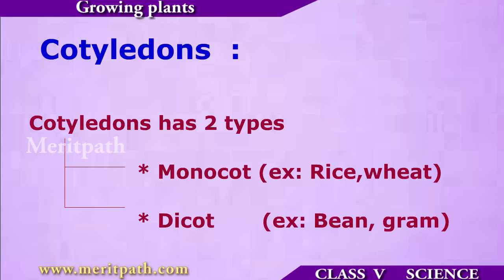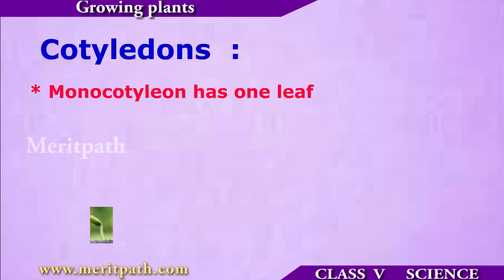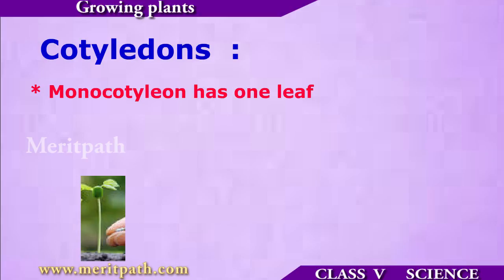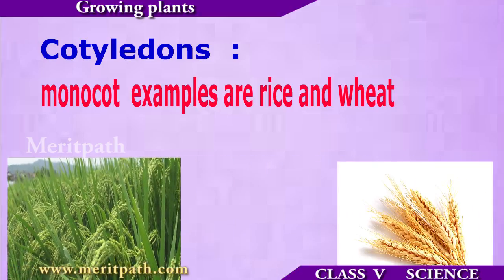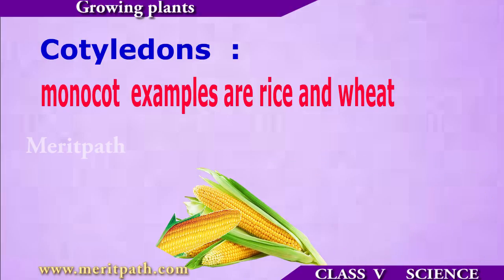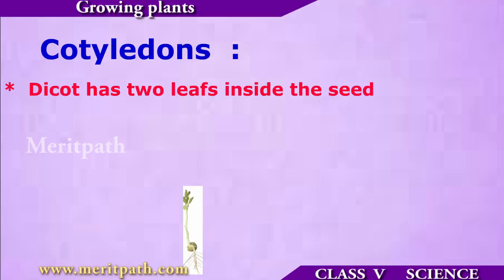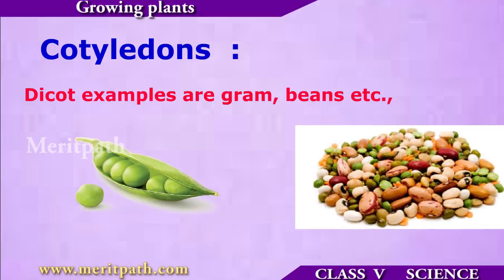Cotyledons are divided into monocot and dicot. A monocot has only one seed leaf inside the seed coat, and it is often only a thin leaf. Examples are rice and wheat seeds. Dicots have two seed leaves inside the seed, and they are usually rounded and fat. Examples are beans and groundnut.